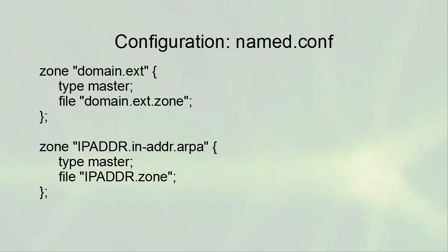The named.conf file contains zone entries. The top entry shown is for domain.ext — you could have an example.com zone. Inside it you have information about that zone: since we own and control it, the type is set as 'master', and then you list the file name, something like domain.ext.zone. You'd likely find that file in /var/named/data, but you need to check the rest of the configuration file to confirm where things are stored.